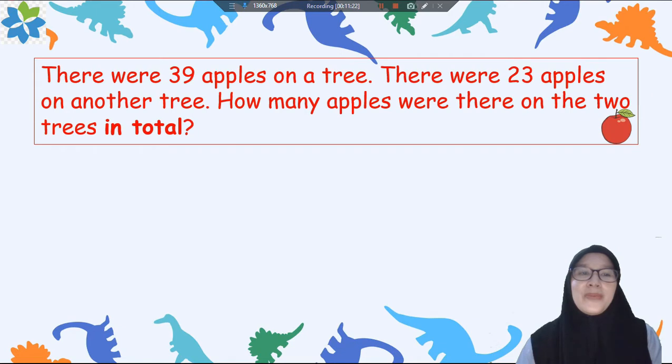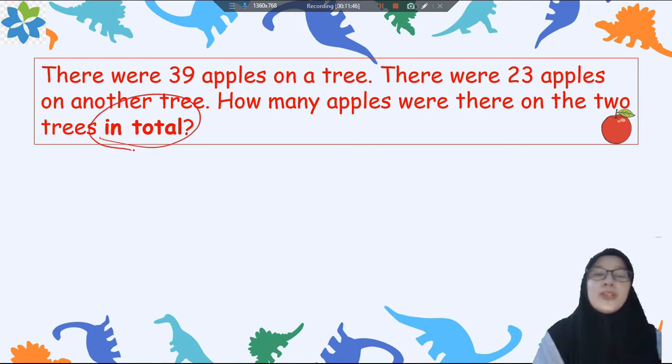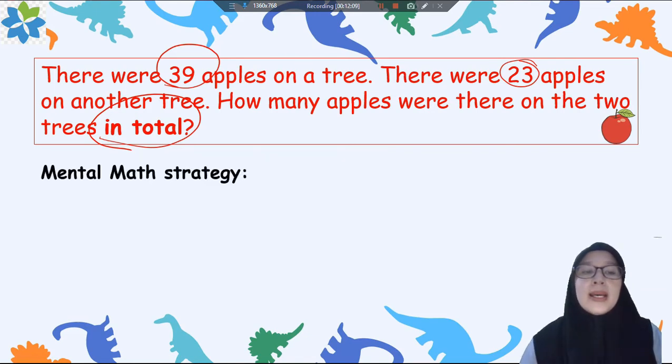And let's go to the next story. There were 39 apples on a tree. There were 23 apples on another tree. How many apples were there on the 2 trees in total? Ini soal penjumlahan atau pengurangan? Because we find in total here so it means that the problem is about penjumlahan. Masih tentang penjumlahan. And we find 39 and 23. Bilangannya 39 dan 23 dan ini adalah soal penjumlahan. Let's try to solve the problem using the other strategy and it is about mental math. Jadi Miss akan tunjukkan cara yang lain lagi untuk menyelesaikan soal ini. First write down the numbers that you find in the problems, it is 39 and 23 right?